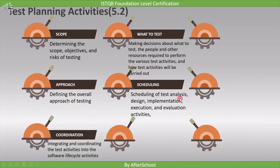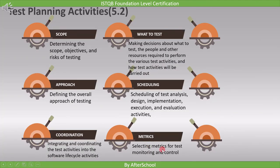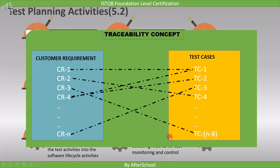The sixth point is related to metrics. In the test planning stage, we select metrics for test monitoring and control. For example, we may decide a metric to achieve 100% traceability. If the testing team does not write a test case for one of the customer requirements, we will not get the link. Since all data is in the tool, by applying filters we can easily find out how many requirements are linked and how many are not — this is how we get different data through metrics.